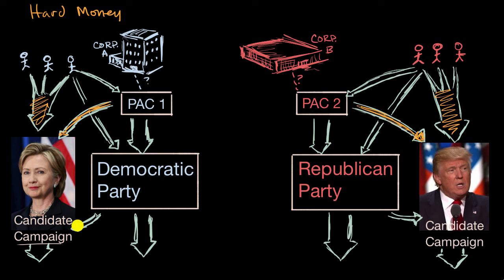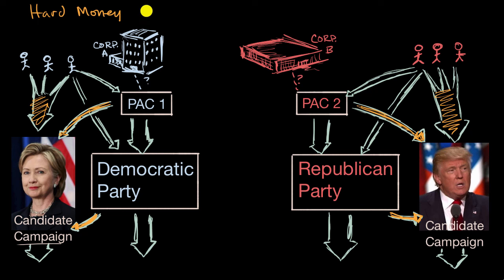Hard money would include money coming from the Democratic Party to Hillary Clinton's campaign or from the Republican Party to Donald Trump's campaign. If there's something called hard money, perhaps there's also something called soft money — and you would be correct, there is something called soft money.